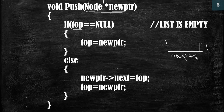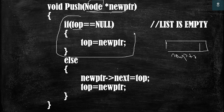After this we have two conditions. The first condition is that the list is empty, and the second condition is that the list is not empty. If the list is empty we execute the if-part, and if the list is not empty then we execute the else part.